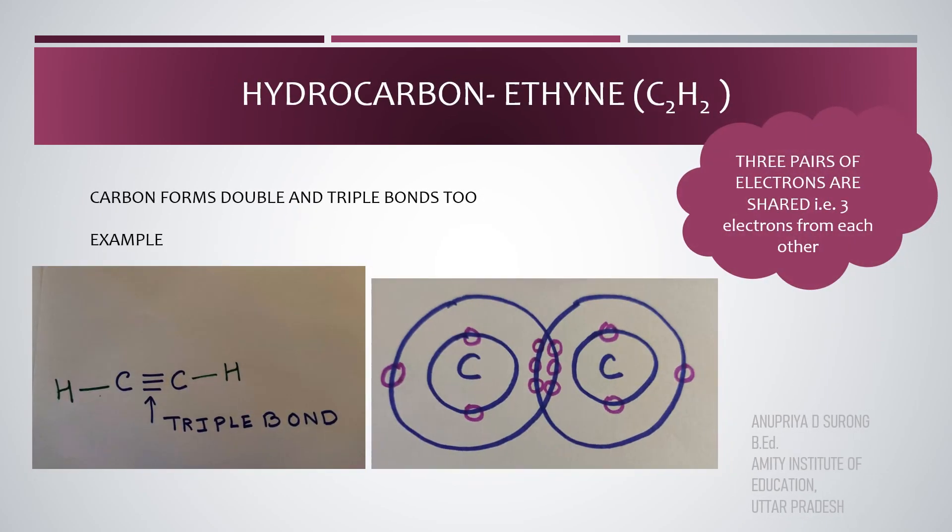Carbon, as it forms triple bond too, you can see in this picture, it's a molecular structure of ethylene, C2H2, where you can see that two carbon atoms share three electrons from each other, forming three pairs of electrons.